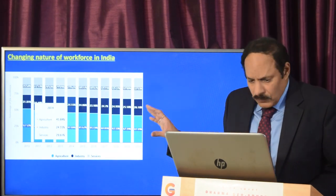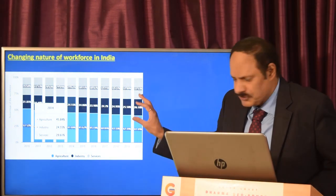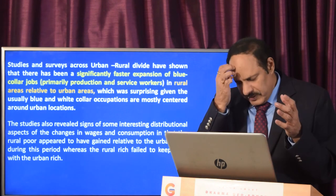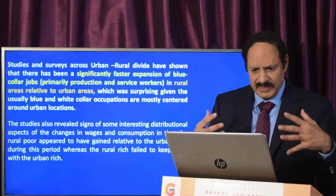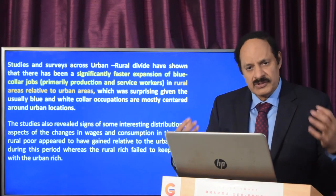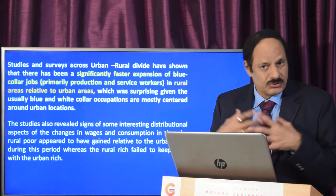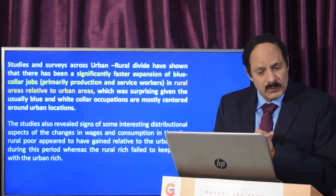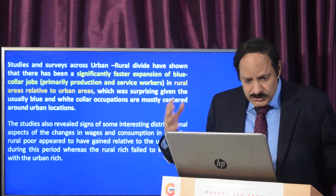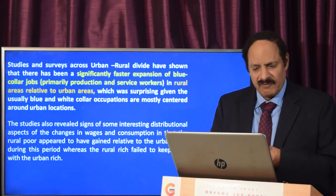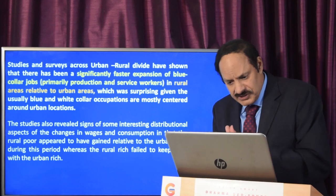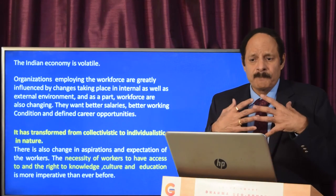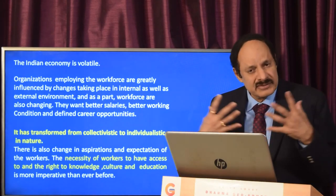You can show a graph illustrating agriculture's decline and the steady increase in industry and services. Studies and surveys on the rural-urban divide show a significantly faster expansion of blue-collar jobs and primary production and service workers in rural areas relative to urban areas. This is surprising given that blue and white-collar occupations are mostly centered in urban locations. Studies also reveal that the rural poor appear to have gained relative to the urban poor during this period, whereas the rural rich failed to keep pace with the urban rich.